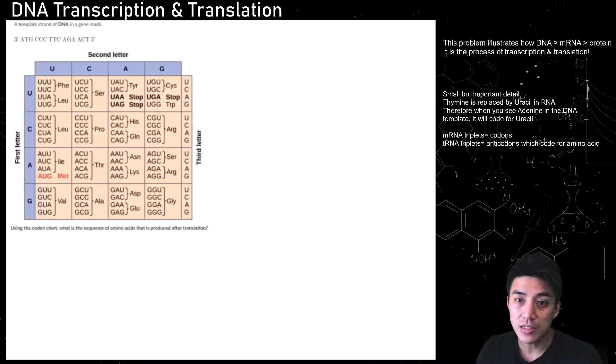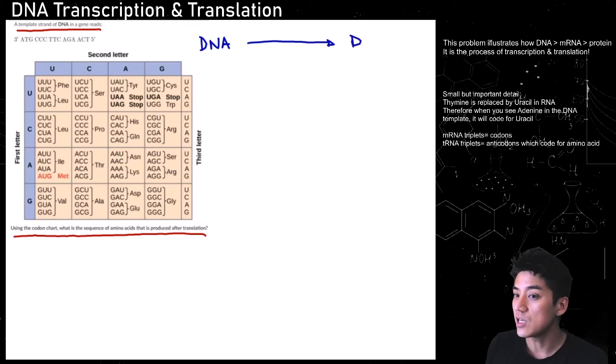So in this problem, a template strand of DNA in a gene reads. And it's going from three prime to five prime over there. And you have all these triplets. So ATG, CCC, TTC, AGA, ACT. We'll get back to that in just a moment. But you have your DNA. And it tells you, using the codon chart, what is the sequence of amino acids that is produced after translation? So you're starting with this DNA strand. And if you recall from what I've been discussing so far, DNA becoming DNA is a process known as replication. So that's just DNA copying itself. So this problem doesn't really involve replication at all.